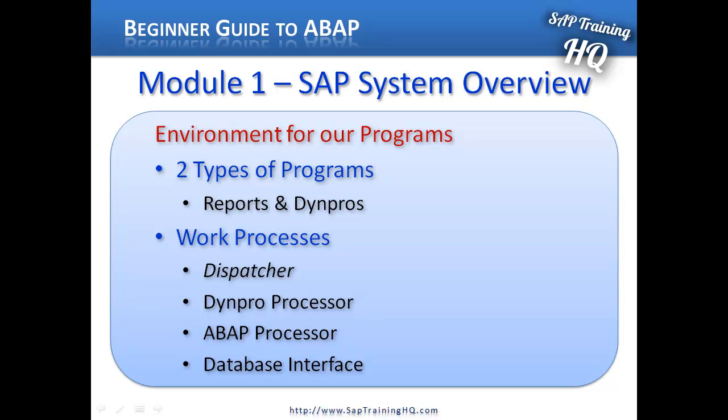The work process also makes three very important elements available. The first one is the DimPro processor. All DimPro programs have flow and processing logic, and it's the DimPro processor's job to handle the actual flow logic itself. It responds to the user's interaction and controls the further flow of the program depending on the user's interaction. It's responsible for dialogue control and the screen itself. But one important thing to remember is it cannot perform calculations — it's just there to manage the flow logic of a program.